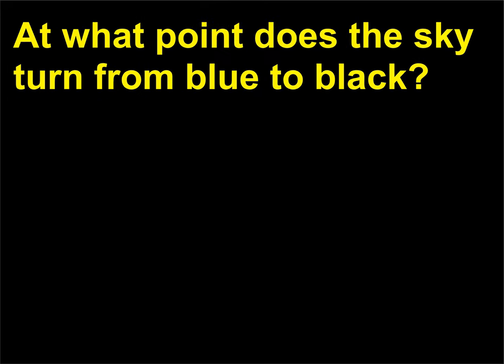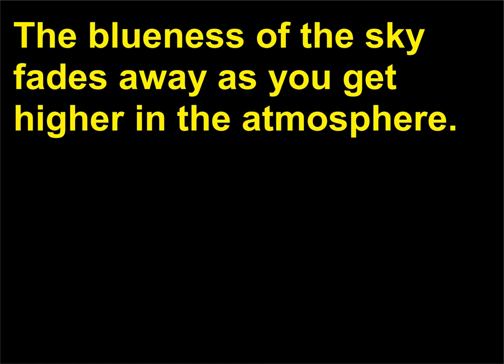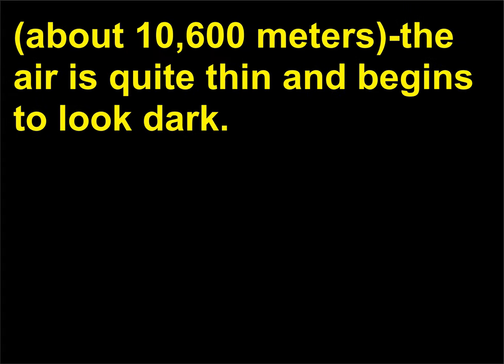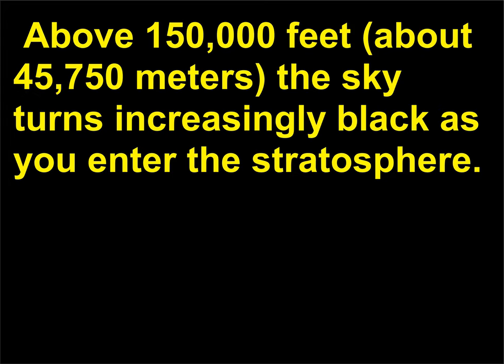At what point does the sky turn from blue to black? The blueness of the sky fades away as you get higher in the atmosphere. By the time you are in the lower troposphere, such as when flying in a commercial jet plane at around 35,000 feet (about 10,600 meters), the air is quite thin and begins to look dark. Above 150,000 feet (about 45,750 meters), the sky turns increasingly black as you enter the stratosphere.